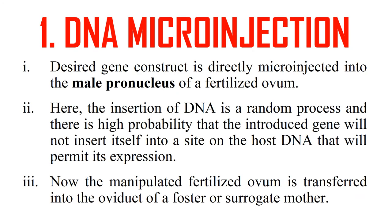First is DNA microinjection. In this method, the desired gene construct — that is, the gene of interest and the expression vector — is directly microinjected into the male pronucleus of the fertilized ovum. The insertion of DNA is a random process, so there is a high probability that the introduced gene will not insert itself into the desired site.